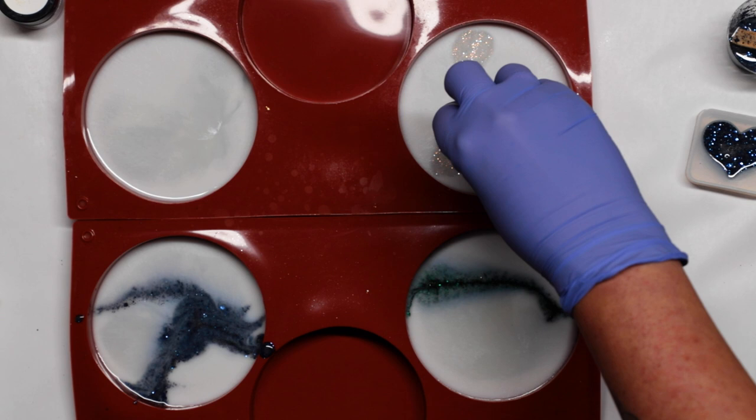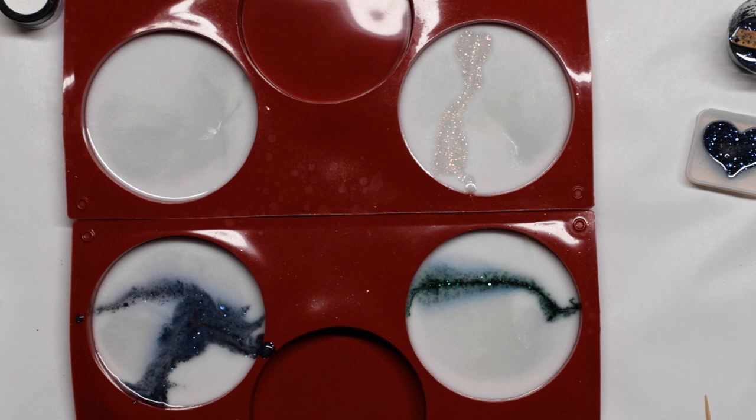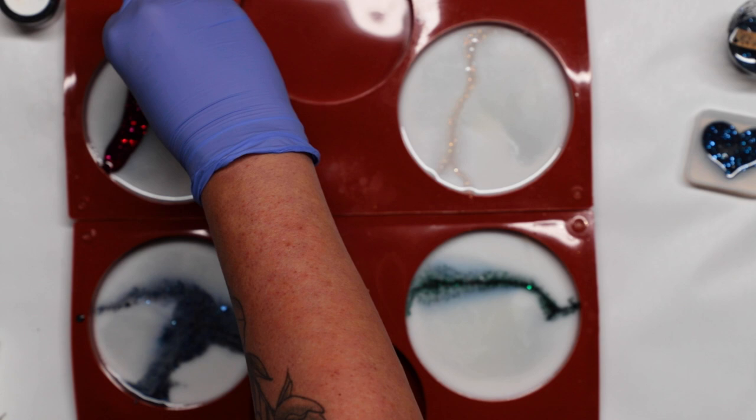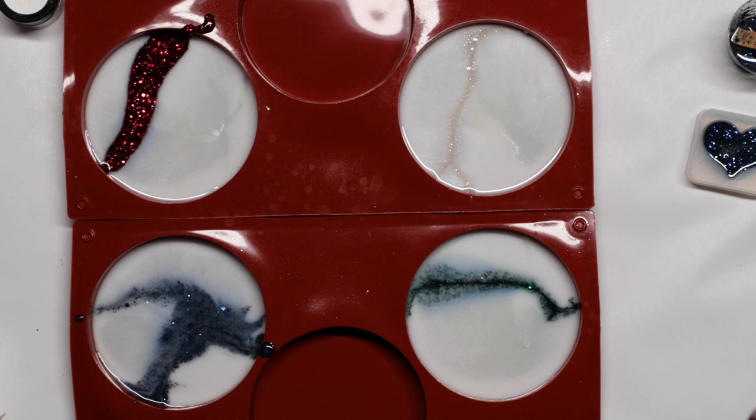My advice is let your resin sit. Let it thicken up because the thinner it is, the more it's going to spread out. Don't attempt to pour immediately from your churn. Let it sit a little bit. Let it warm up. I would aim for a good 76 degrees.